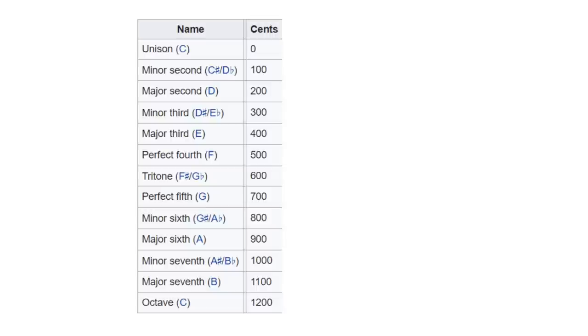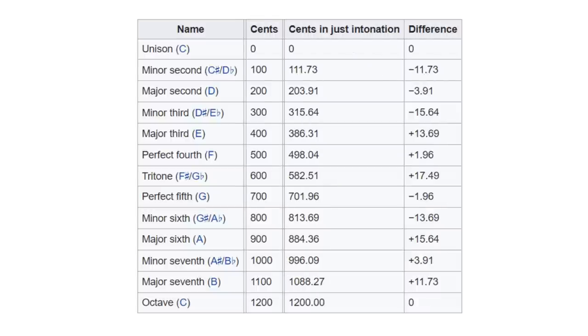However, it comes with a price. All of the other intervals are now out of tune. Fifths are 2 cents flat. Fourths are 2 cents sharp. Major thirds are 14 cents sharp. But our ears are okay with this because the difference is so small, it's difficult to discern.